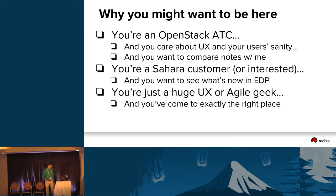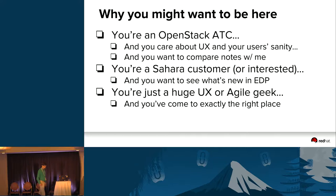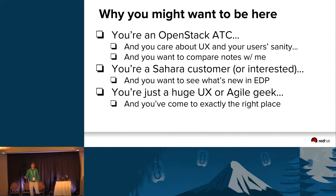You might want to be here if you're an OpenStack ATC who cares about UX and user sanity, wants to write APIs that make people feel at home and know where to go next, and wants to compare notes. If you're a Sahara customer, you'll learn about a new feature that makes it easier to run EDP jobs reproducibly and efficiently. Or if you're a UX geek who loves talking about Agile — come talk to me afterwards.